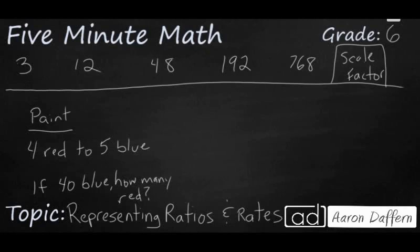So now it's time for you to try. On the problem on top, see if you can find the scale factor to see how we're increasing from 3 to 12 to 48 and so on. And on the bottom, if you are mixing paint with a ratio of 4 red to 5 blue, if you have 40 blue, how many reds will you have? When you have your answers, unpause the video and check your work.